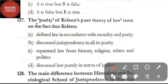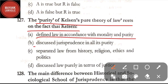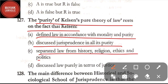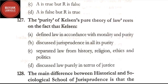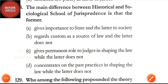Question number 127: the purity of Kelsen's pure theory of law rests on the fact that Kelsen — option A: defined law in accordance with morality and purity; option B: discussed jurisprudence in all its purity; option C: separated law from history, religion, ethics, and politics; option D: discussed law purely in terms of justice. The correct answer is option C — Kelsen separated law from history, religion, ethics, and politics.